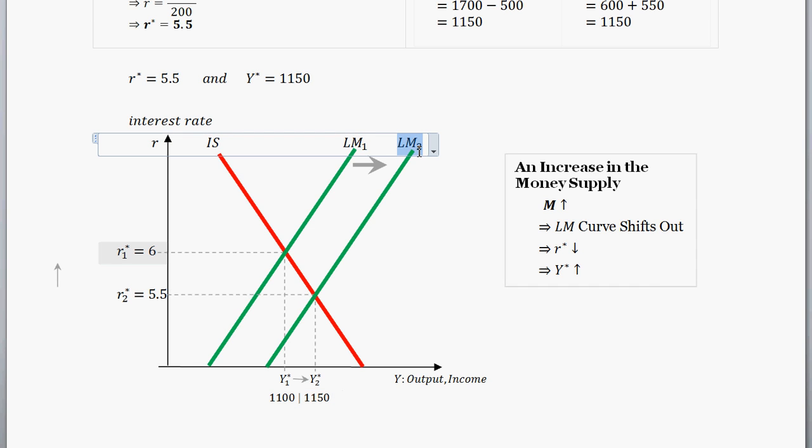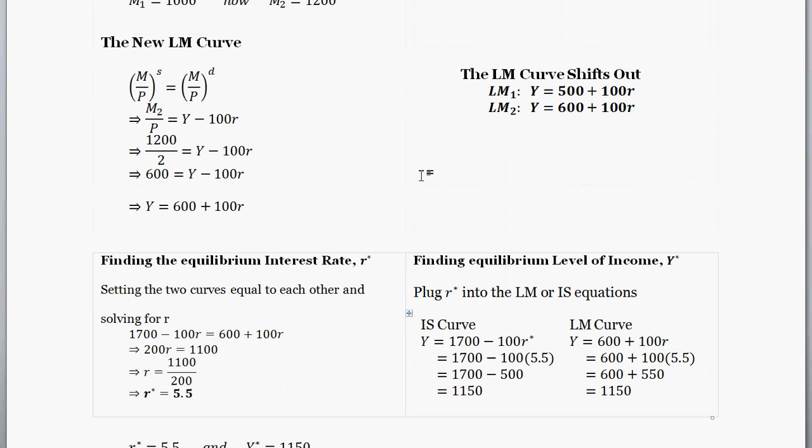So now that we have our new LM curve, LM sub 2, we see that's an increase, that's a shift out in the LM curve. We found that right here.